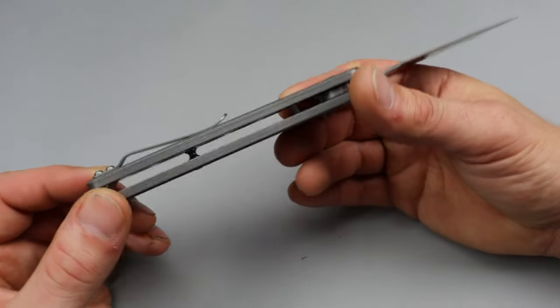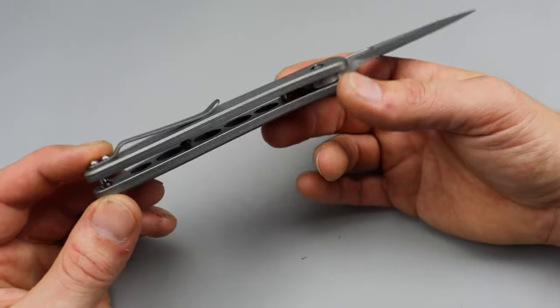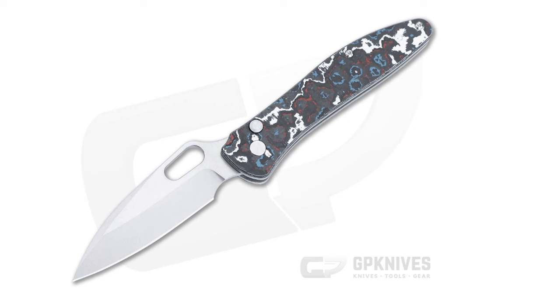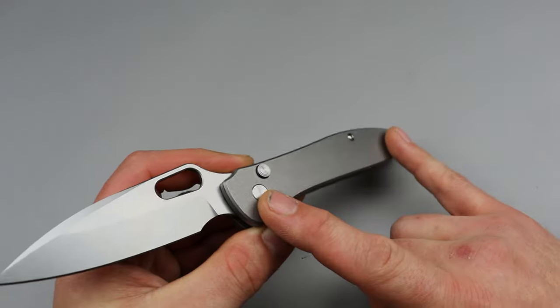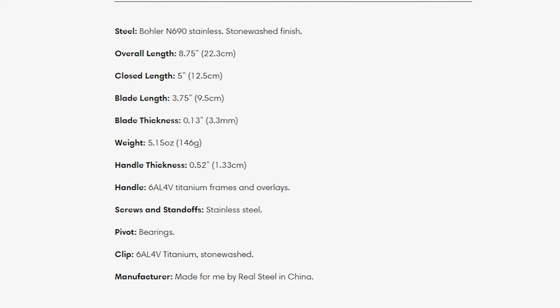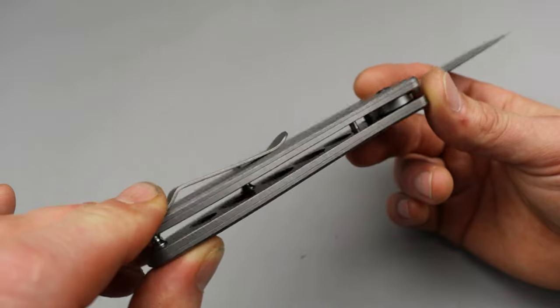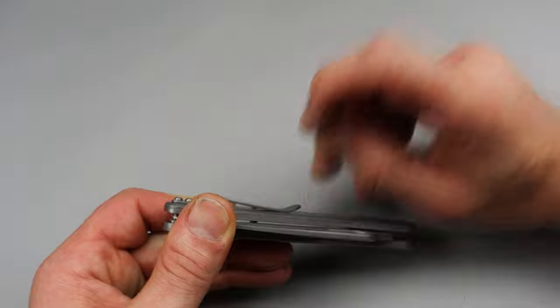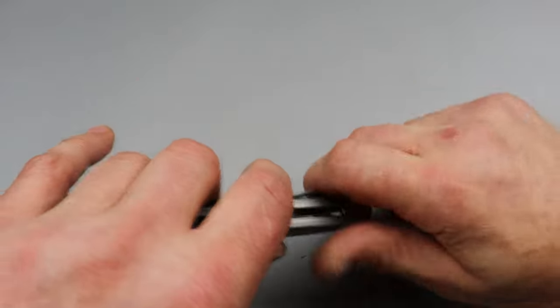We have N690 and titanium. There are other versions in fat carbon fiber. The fat carbon fiber one still has titanium liners and then they just swap the scales. This one has the titanium scales, the other one has the fat carbon fiber scales. Both of them have titanium liners and you can see the heavy milling in the titanium liners. Spring pocket clip that works great. These work great, they're really good clips. I actually appreciate clips that work this good because they don't chew your pockets up.